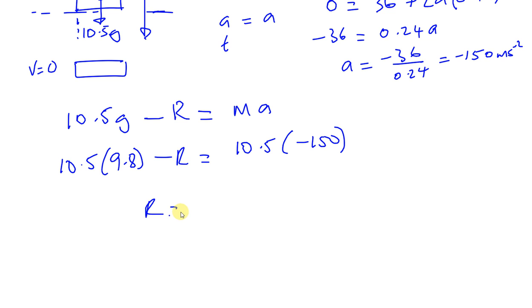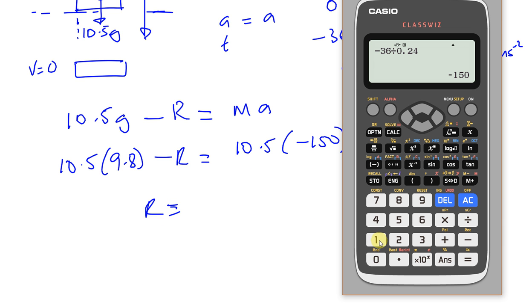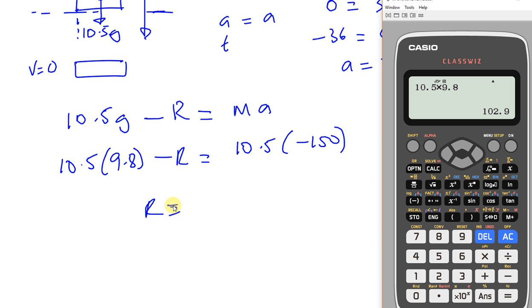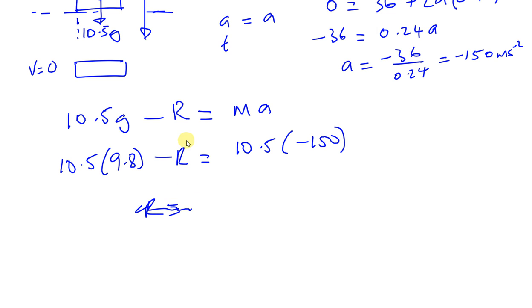R is going to be basically 10.5 times 9.8. And you're going to have to add this. So you're going to basically have this. You're going to have R equals, if I do it this way, just to show you, you have 10.5 times 9.8. And that's going to become positive on this side, isn't it? Because you have to add it. It's a negative. So you're going to have times 10 plus 10.5 times 150. That will become positive on this side. So R is going to be the sum of.